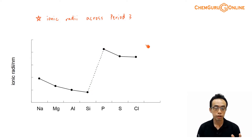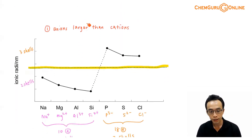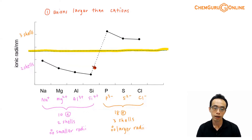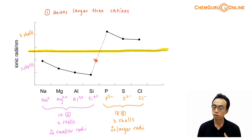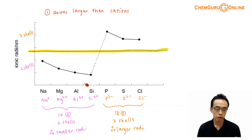Ionic radii can be broken down into two portions. First, we notice that all anions will be larger than all cations. For period 3 elements forming ions, the first four elements — sodium, magnesium, aluminum, and silicon — will form cations, losing electrons to form positively charged ions.